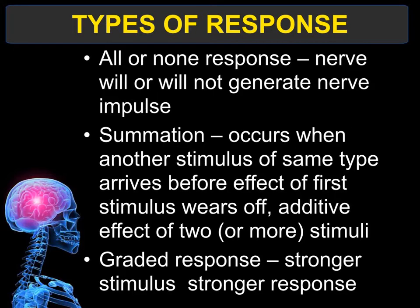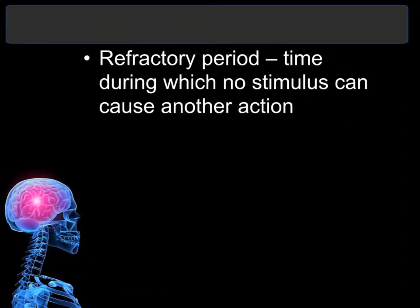Summation occurs when another stimulus comes in before the previous stimulus wears off, creating an additive effect — one effect builds on top of the other. Graded response means that a stronger stimulus will stimulate more nerves, producing a stronger response. The refractory period is the time after an action potential during which the cell is being repolarized and returning to negative 70, so even if another stimulus arrives, it cannot create another action potential.